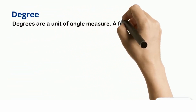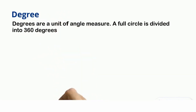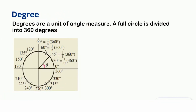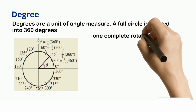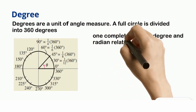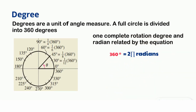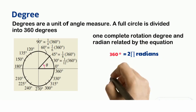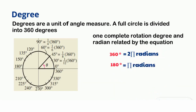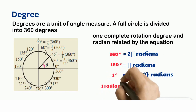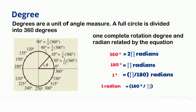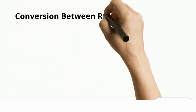Degrees are a unit of angle measure. A full circle is divided into 360 degrees. The relationship: 360° = 2π radians, 180° = π radians. If we want 1 degree: 1° = π/180 radians. If we want 1 radian: 1 radian = 180°/π. We use these equations for conversion between radians and degrees.